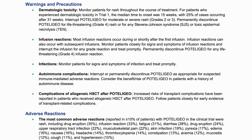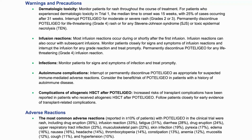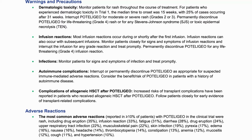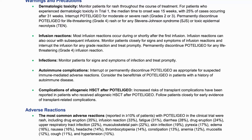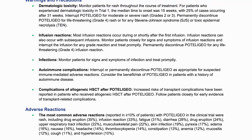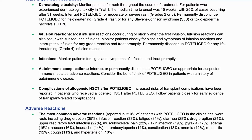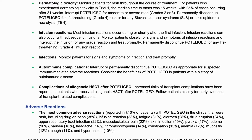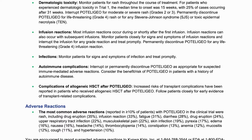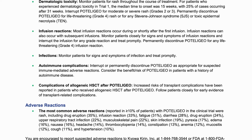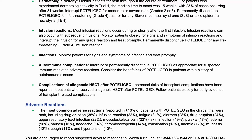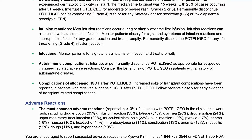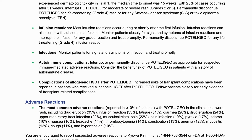Consider the benefit-risk of mogamolizumab in patients with a history of autoimmune disease. Complications of allogeneic HSCT after mogamolizumab: Increased risk of transplant complications have been reported in patients who received allogeneic HSCT after mogamolizumab. Follow patients closely for early evidence of transplant-related complications.